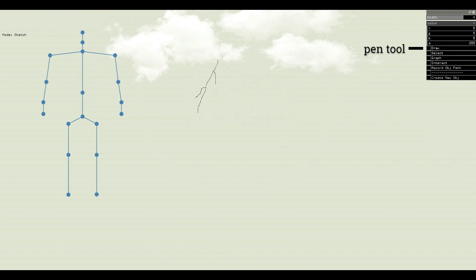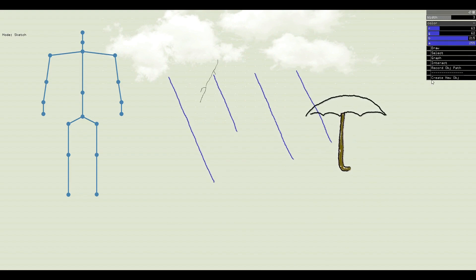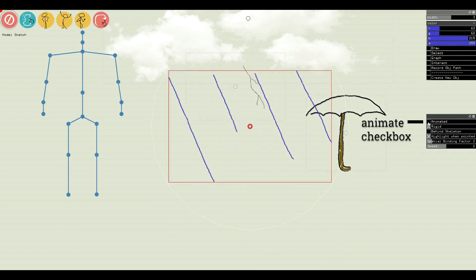Now let's go to the drawing mode and draw an umbrella for the presenter. We then add some rain effect by drawing a few lines and making them animate. It is as easy as checking a box.